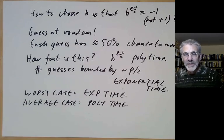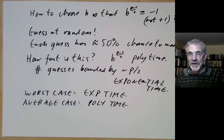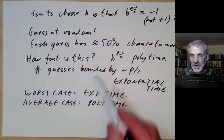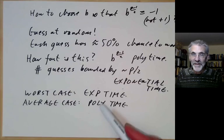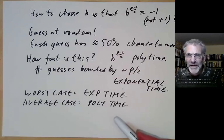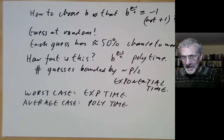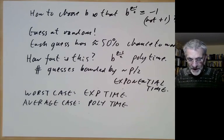This sort of problem is quite common in computational number theory. There are actually quite a few probabilistic algorithms which in practice are very fast, but it's difficult to actually prove they're fast because of this probabilistic aspect.